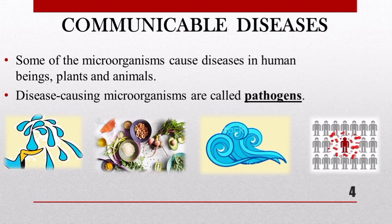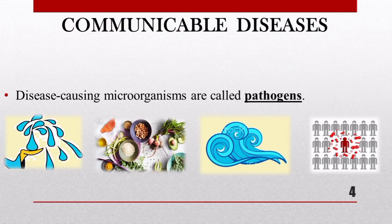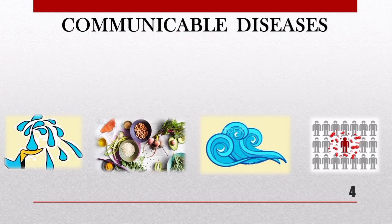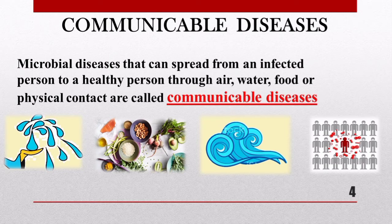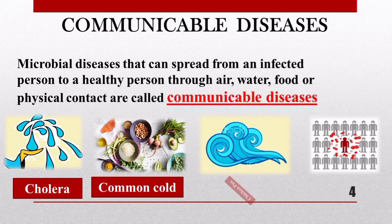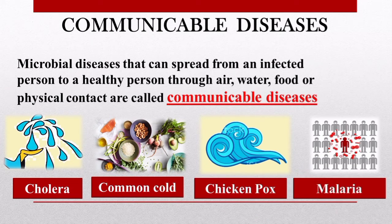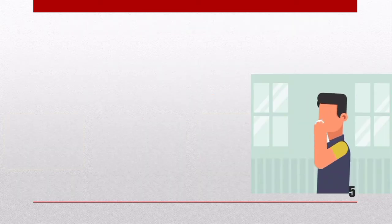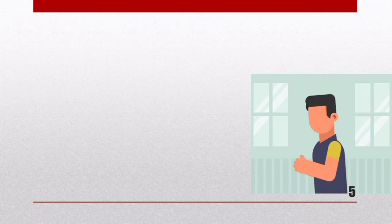Diseases that spread from an infected person to a healthy person through air, water, food, or direct contact are known as communicable diseases. Some examples of communicable diseases are cholera, common cold, chicken pox, and malaria.